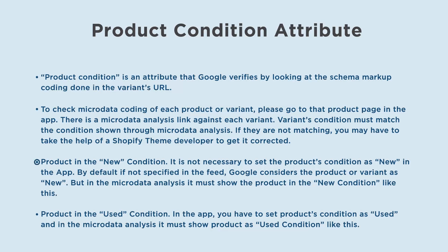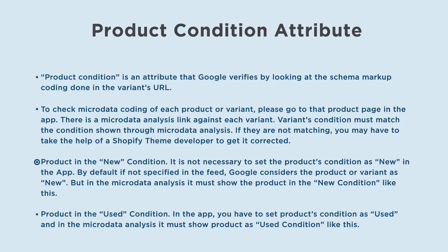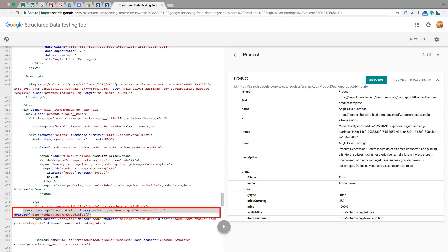Product in new condition: it is not necessary to set the product's condition as new in the app. By default, if not specified in the feed, Google considers the product or variant as new. But in the Microdata Analysis, it must show the product in the new condition like this.